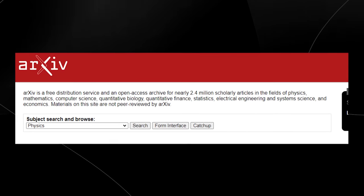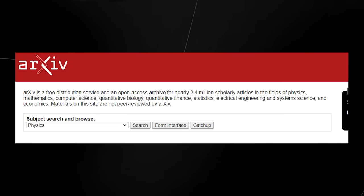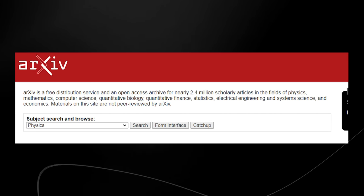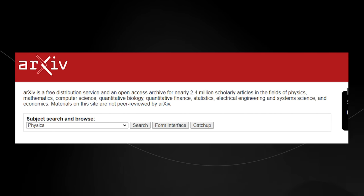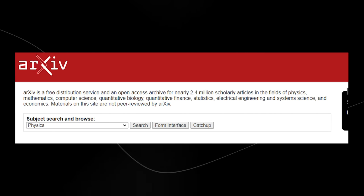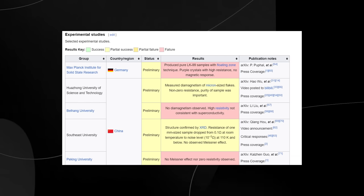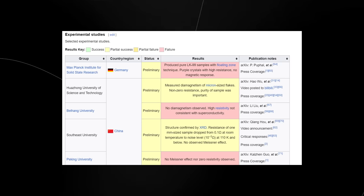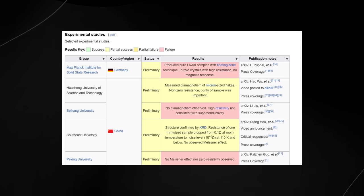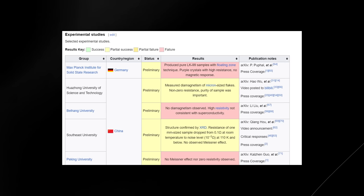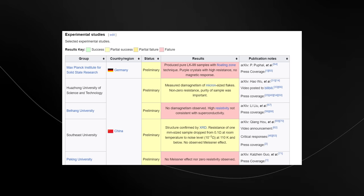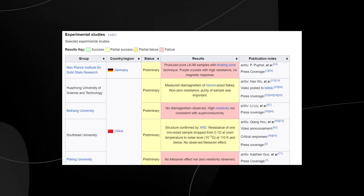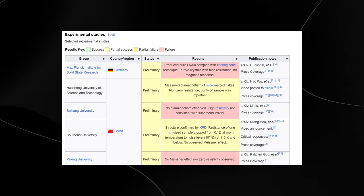A significant part of the controversy stems from the fact that the initial claims about LK-99 were published on a preprint server where papers have not undergone peer review. This led to a wave of attempts to replicate the findings, some of which were even live-streamed on social media platforms. However, a body of evidence has since accumulated that contradicts the initial claims. Several research groups have released studies that counter the original claims, with some suggesting that any apparent superconducting properties were likely due to impurities in the samples.